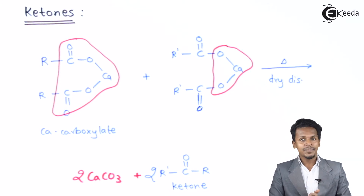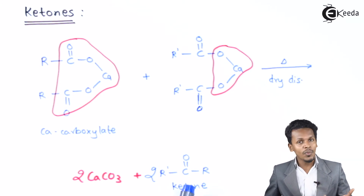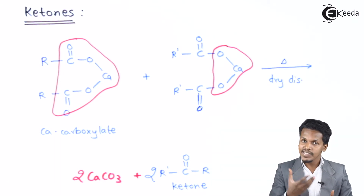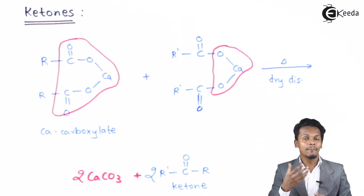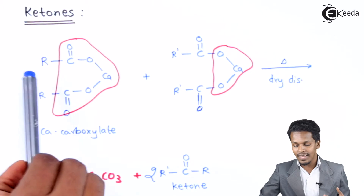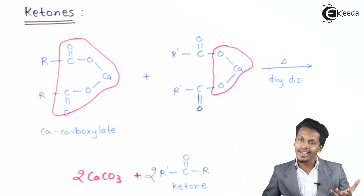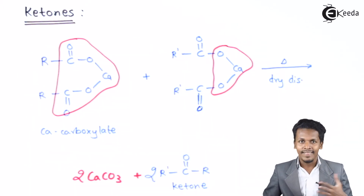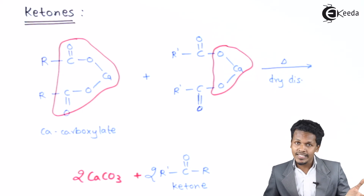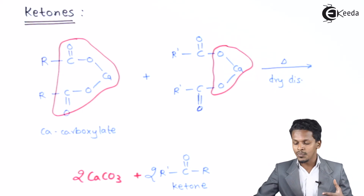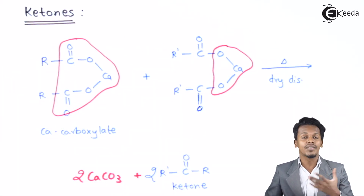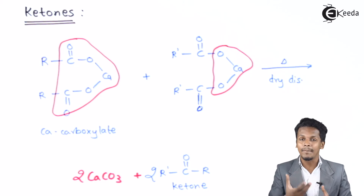The ketone formed here could be a simple ketone or a mixed ketone. If this R and this R′ are the same, then the product will be a simple ketone. If this R and this R′ are different, then we could form a mixed ketone.